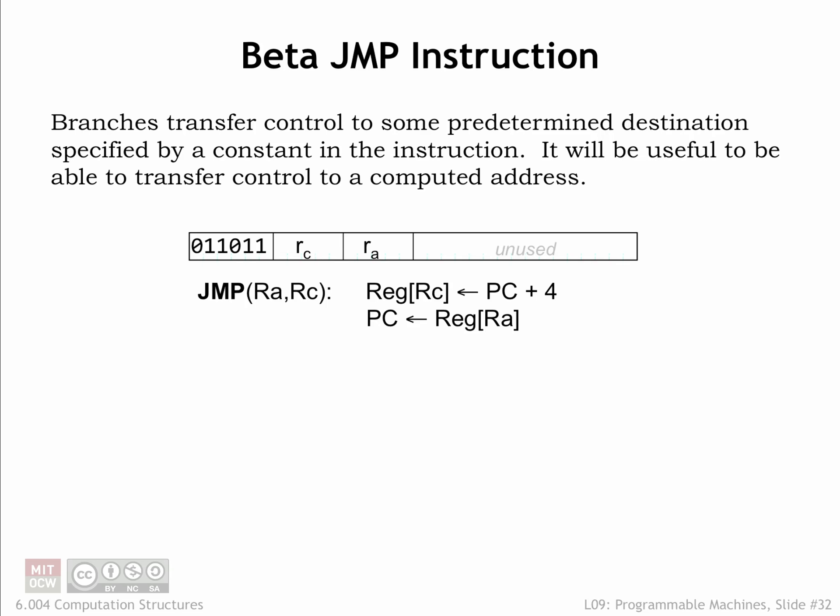Finally, our last instruction. Branches conditionally transfer control to a specific target instruction, but will also need the ability to compute the address of the target instruction. That ability is provided by the JUMP instruction, which simply sets the program counter to the value from register RA.